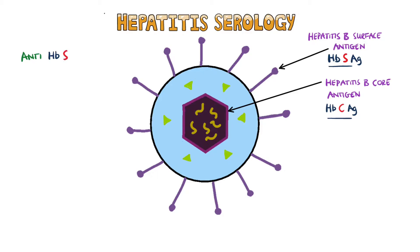Antibodies can form against either of these, so we can have anti-hepatitis B surface antigen antibodies and anti-hepatitis B core antigen antibodies. The anti-hepatitis B core antibodies can be split into the IgM antibodies and the total antibodies. This is important in determining the time frame of the infection, since IgM is the first one formed.